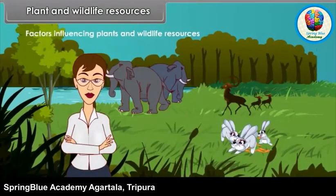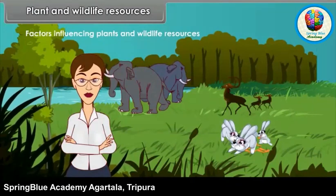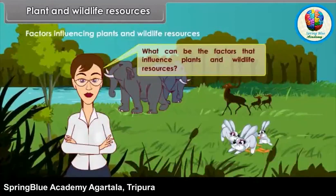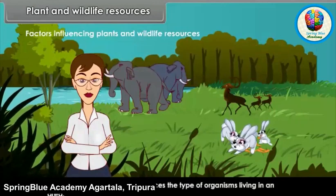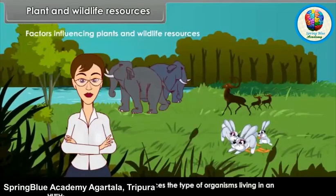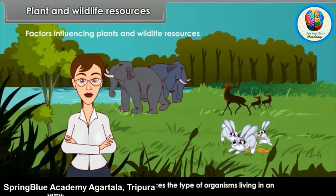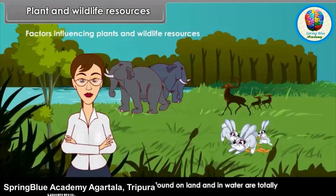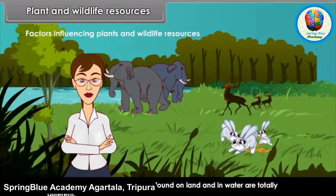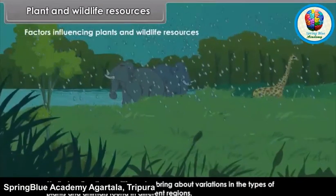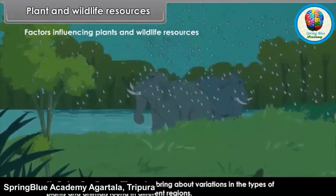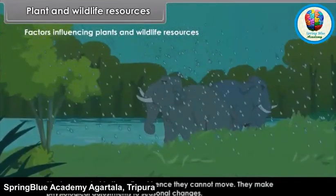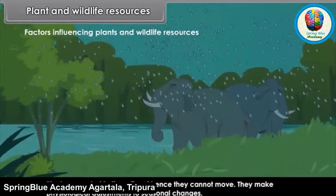Factors influencing plants and wildlife resources: What can be the factors that influence plants and wildlife resources? The physical environment influences the type of organisms living in an area. For example, plants and animals found on land and in water are totally different. Similarly, climatic conditions also bring about variations in the types of plants and animals found in different regions. Plants are rooted to the soil and hence they cannot move.